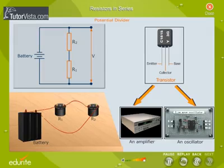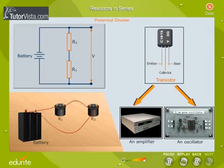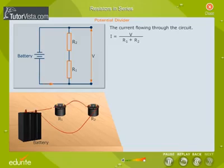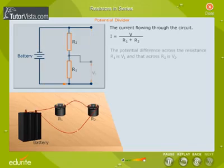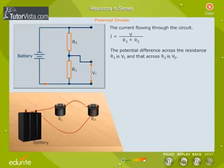In such situations, we make use of this voltage divider circuit. Let us understand how the voltage is divided across the circuit with the help of mathematical equations. The current flowing through the circuit is I is equal to V by R1 plus R2. The potential difference across R1 is V1 and that across R2 is V2.